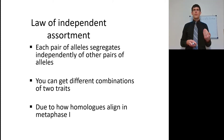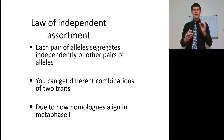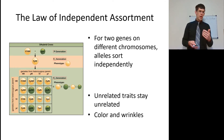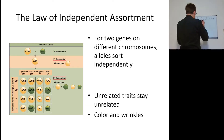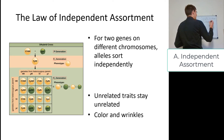You can get tall plants with white flowers, tall plants with purple flowers, or short plants with white or purple flowers. These combinations should be independent depending on how the homologs align in metaphase one. The law of independent assortment basically states that two traits are independent.